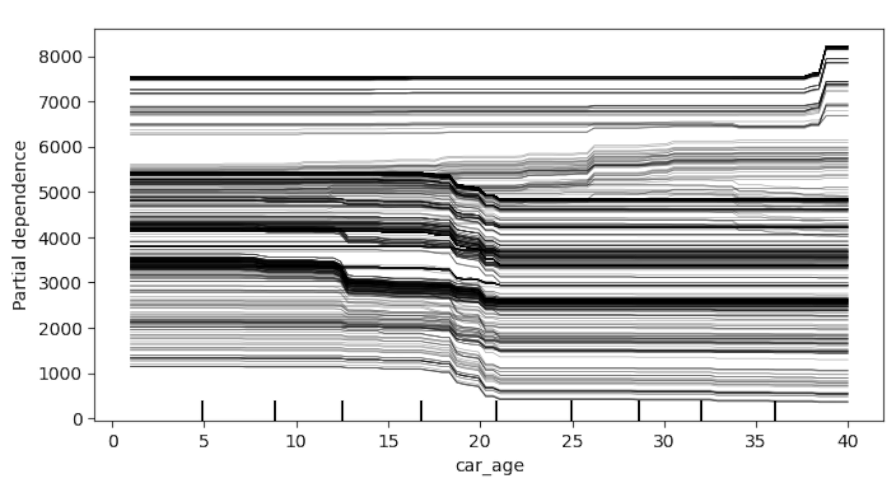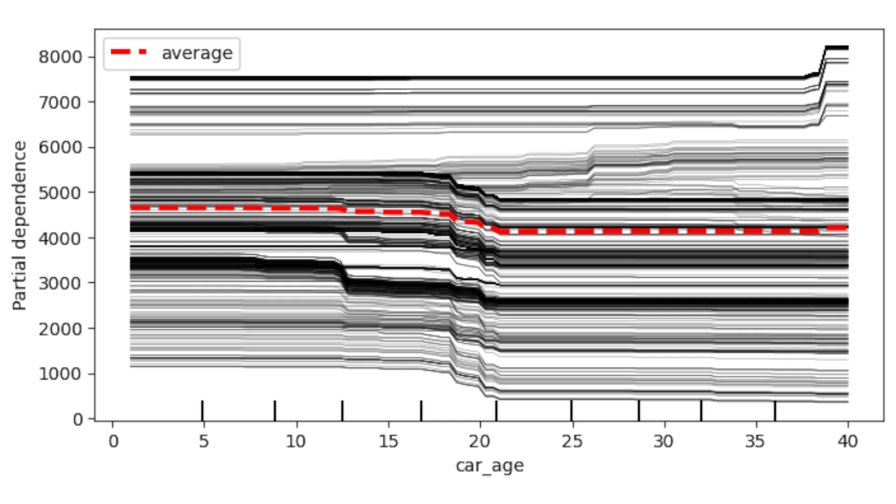To create a PDP, the final step is to calculate the average prediction at each value for car age. This gives us the red line. This line is the PDP. By holding the other features constant and averaging over the instances, we can isolate the relationship with car age. We can see that the predicted price tends to decrease with car age.